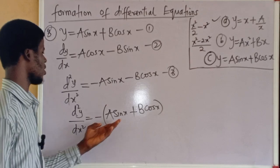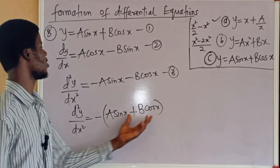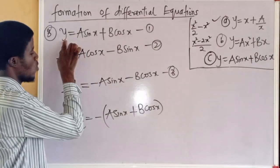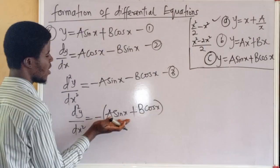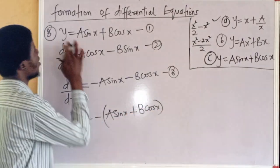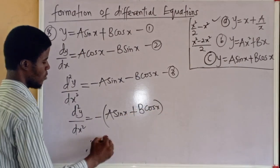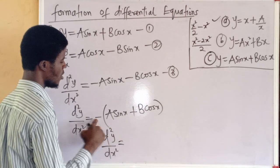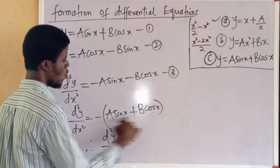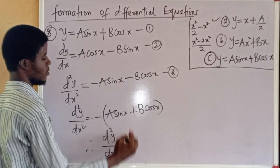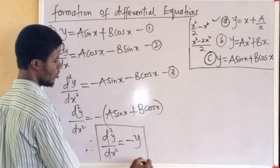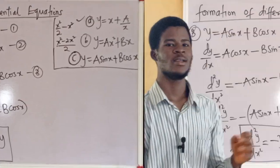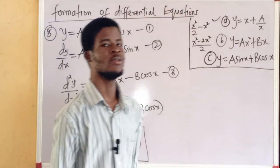I want to factor out minus 1 from the right-hand side of equation 3: d²y/dx² equals minus 1 times (a sin x plus b cos x). Now, a sin x plus b cos x is what we have in equation 1 and equals y. So in place of a sin x plus b cos x we can write y. Therefore, d²y/dx² equals minus y. This is the differential equation formed from this very equation.